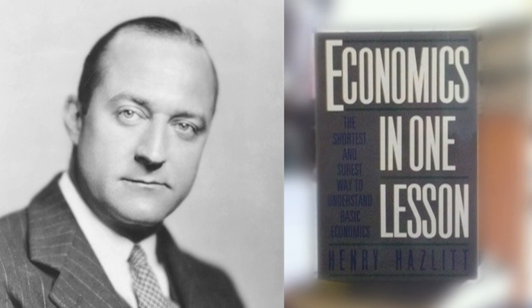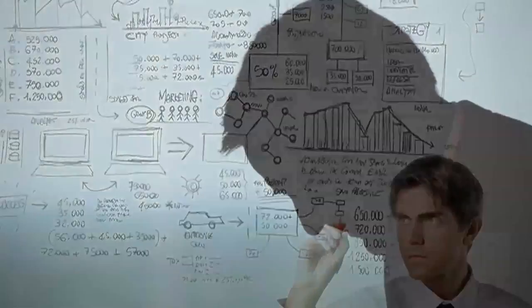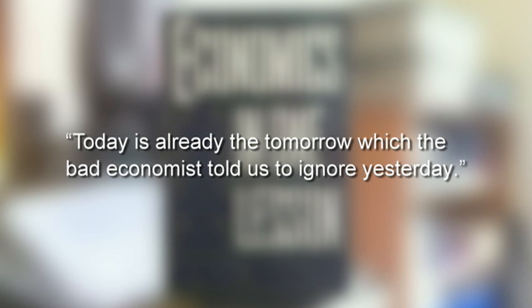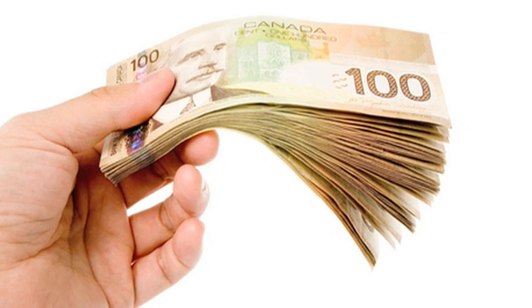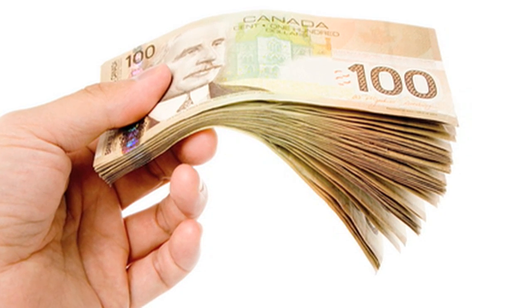Hazlitt's book is the place to start, first of all because it's a miracle of clear writing. Economics can be complicated, forbidding, gloomy — not for nothing did Carlyle call it the dismal science. But Hazlitt's book is not dismal. It's full of very quotable lines, like 'today is already the tomorrow the bad economist told us to ignore yesterday,' or something very simple like 'we cannot distribute more wealth than is created.' That's very often what's wrong with these programs.